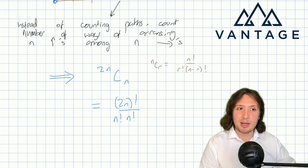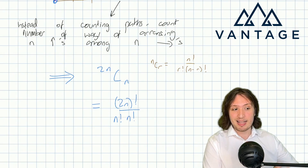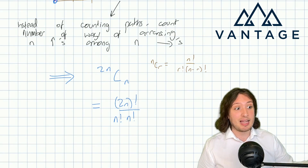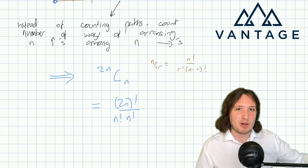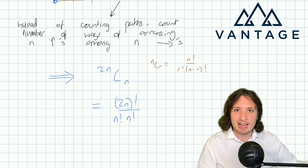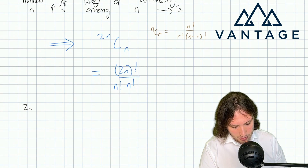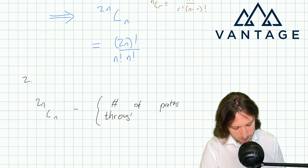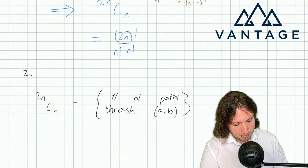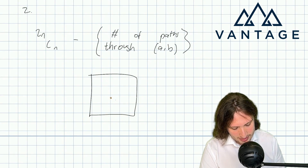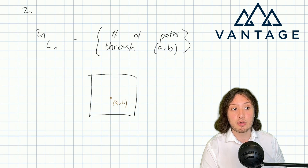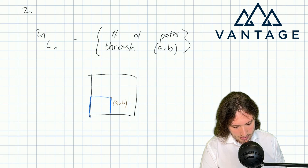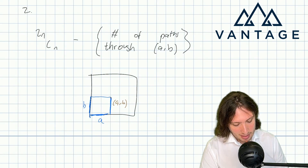In general, when counting things subject to a constraint, you can count the things which disobey the constraint and subtract — sometimes that's easier, like how in probability subtracting P(A doesn't happen) from 1 is sometimes simpler. So the answer will be 2n choose n minus the number of paths through (a,b). To count paths through (a,b), note that any such path must solve two smaller grids: first traverse the a by b grid from (0,0) to (a,b), then traverse the remaining grid.